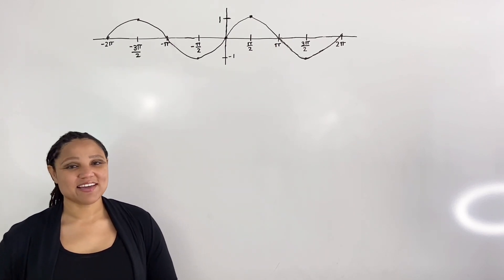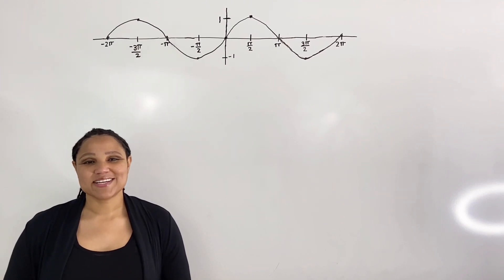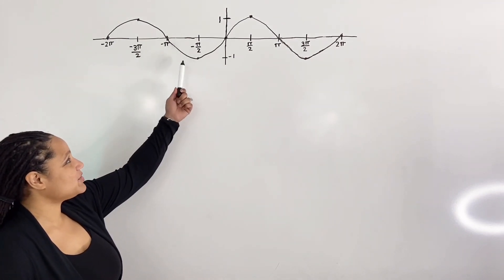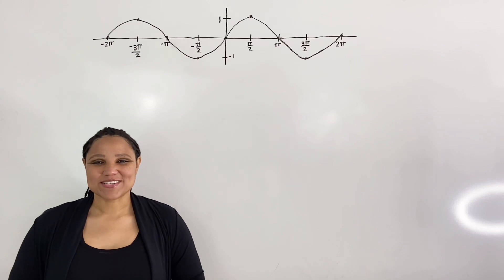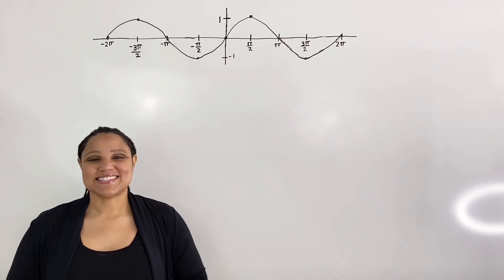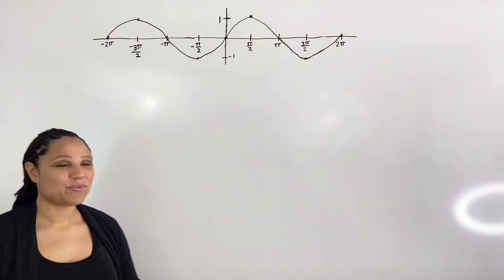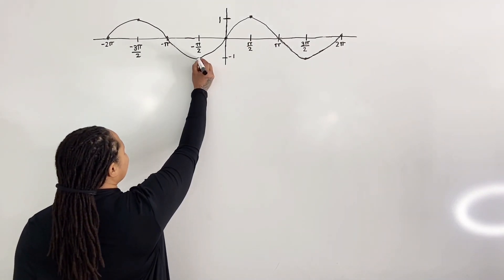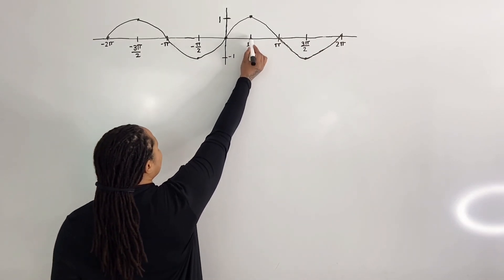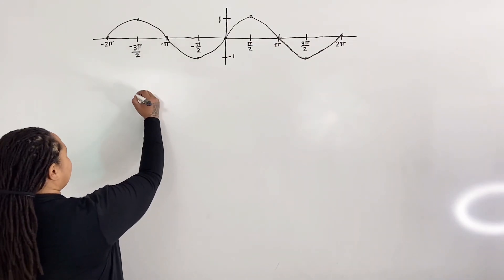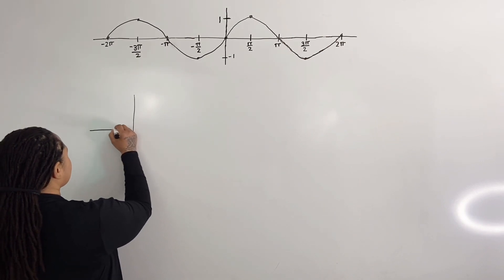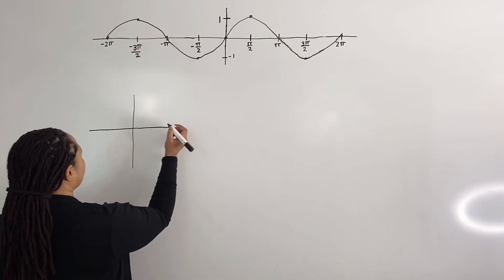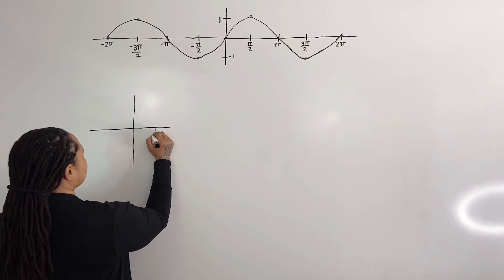But mathematicians are clever. They decided to restrict the domain from negative pi over two to pi over two. In that way the graph passes the horizontal line test, and thus the sine function has an inverse. So we are going to restrict the graph to the interval from negative pi over two to pi over two.